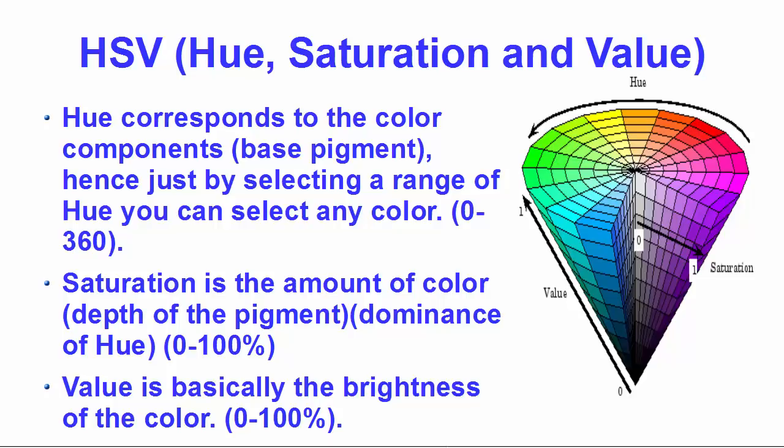Welcome to the next video on OpenCV tutorial for beginners using Python. In this video we will see how we can perform object detection using HSV color space. We have already seen how to work with BGR or colored images and grayscale images, and how to convert between them. There are more than 150 color space conversion methods in OpenCV, and one of them is colored image to HSV. HSV stands for hue, saturation, and value.